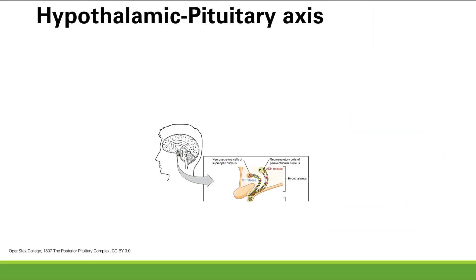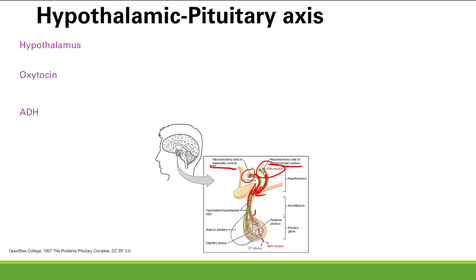Continuing the hypothalamic-pituitary axis — now the posterior pituitary. The two hormones to know are oxytocin and ADH. They're made in the hypothalamus, in the supraoptic nucleus and the paraventricular nucleus, sent down and stored in the posterior pituitary. When triggered, they are released from the posterior pituitary.